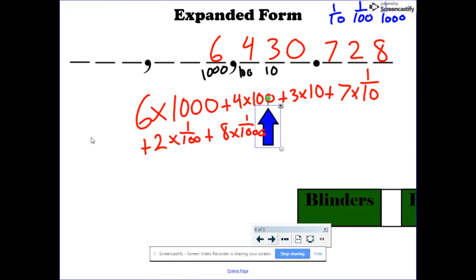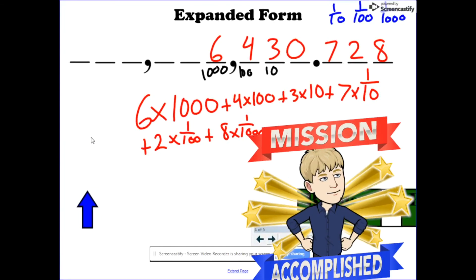And that's this number written in expanded form. Six thousand, four hundred thirty, and seven hundred twenty-eight thousandths. And that's expanded form. Again, used to kind of help with estimation and mental math.